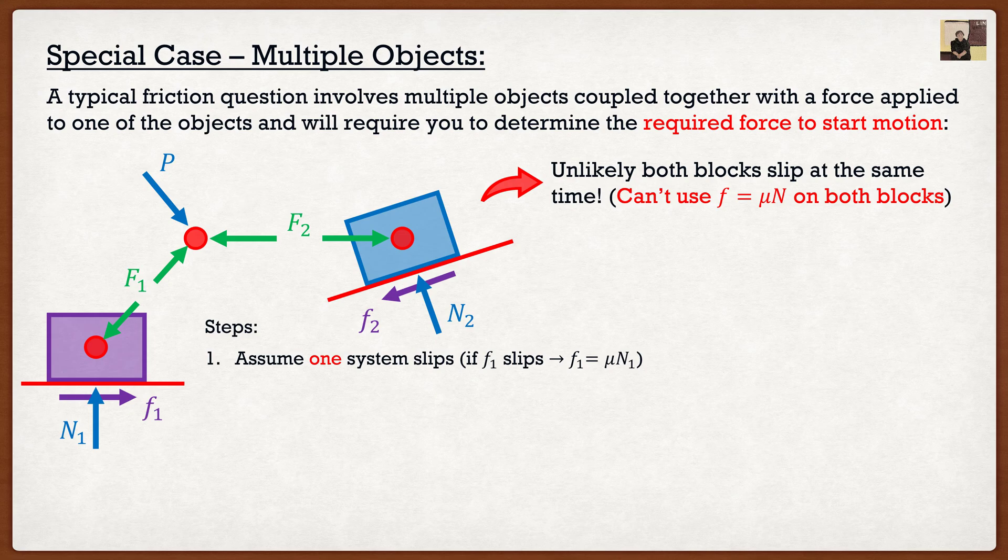So what I said is I'm going to pretend that F1 slips. So we know that F1 is equal to mu times N1. Basically, this system on the left over here, if I now know what F1 is, well then I can solve the system using equilibrium.